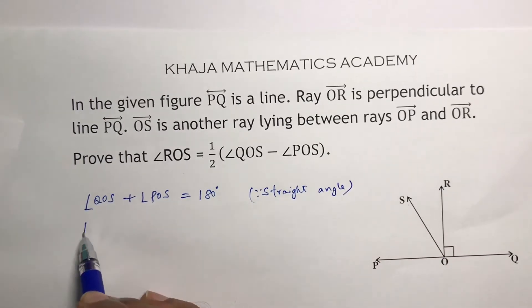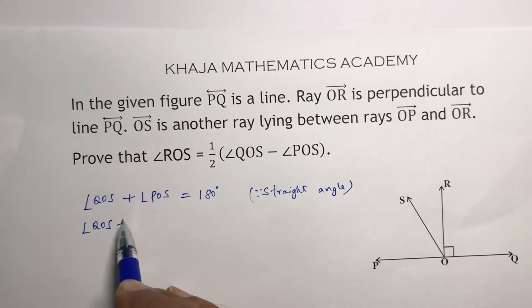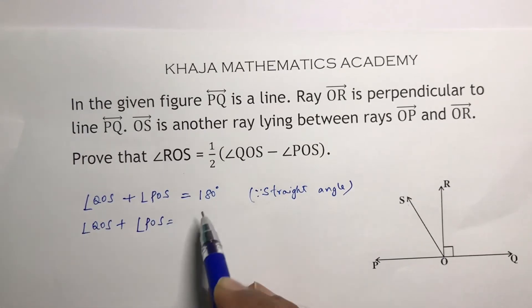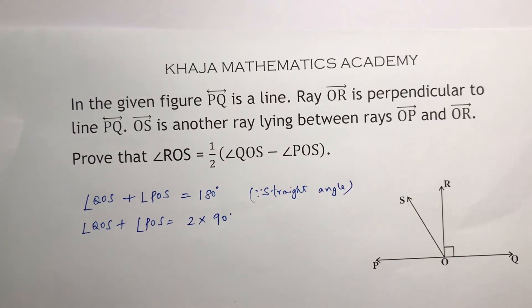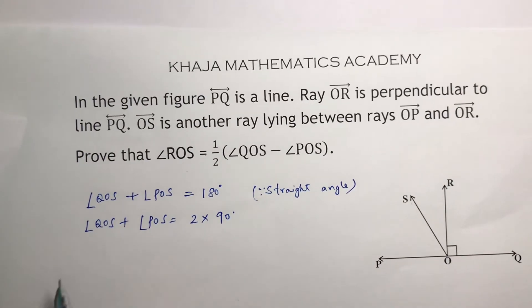Now see, next step, QOS plus POS, 180 I can write as 2 times 90.